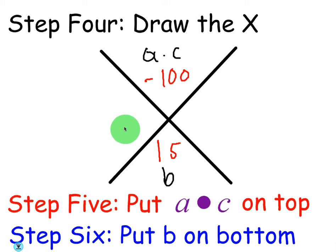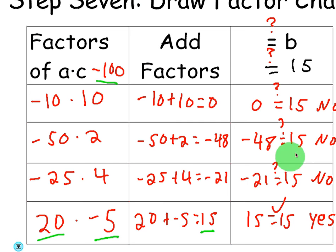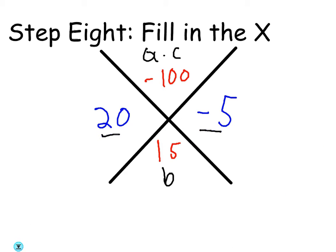20 and negative 5. Yep, 20. I will show you the factor chart, just that you don't have to write it down. I mean, like I said, he easily saw it was 20 times negative 5 gives you negative 100. 20 plus negative 5 gives you 15. However, if you were to do the factor chart, you could try several different factors. They're not going to work out. The only one that works out is 20 times negative 5, because if you add it, it gives you 15.